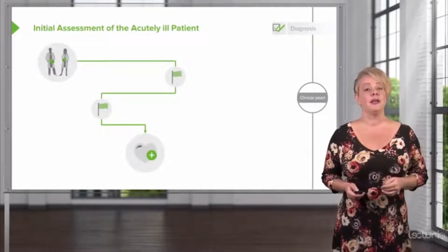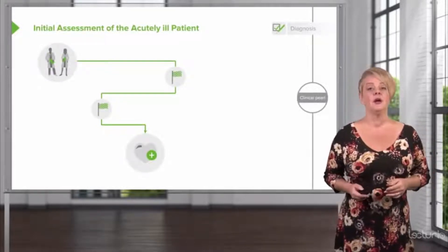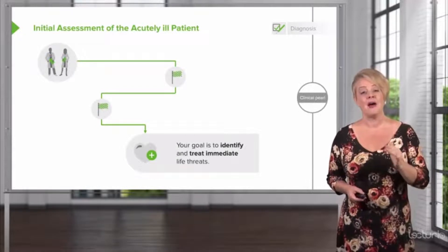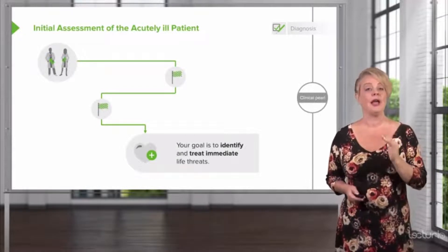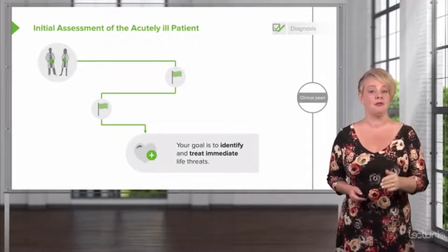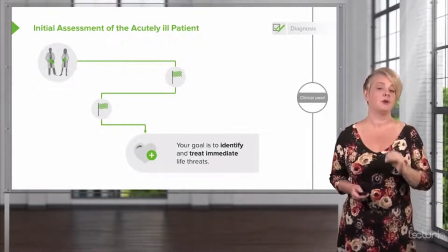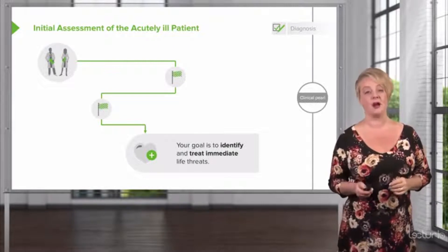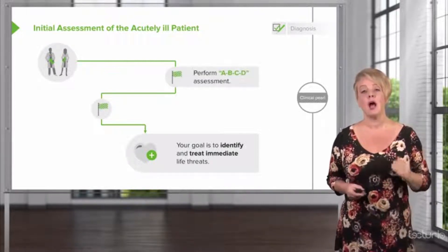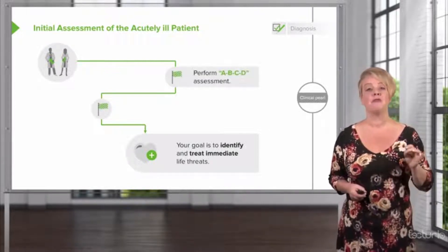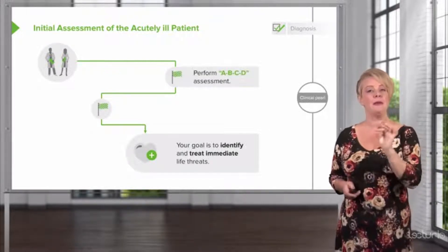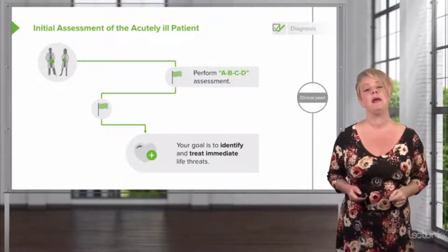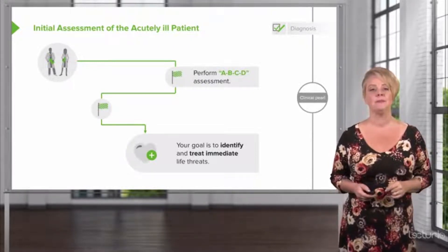When we assess the acutely ill patient, we're going to start off with the goal of identifying and treating immediate life threats. That's going to be the mantra we repeat to ourselves while we're taking care of this patient. We're going to accomplish that by performing an A, B, C, D assessment on each and every patient, each and every time.